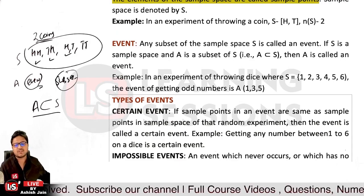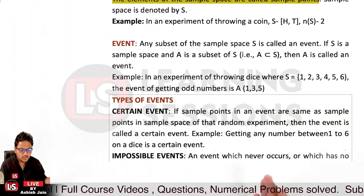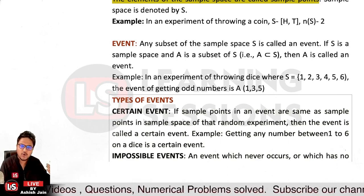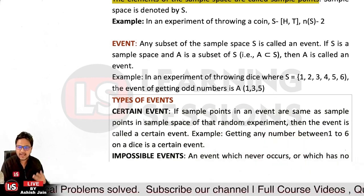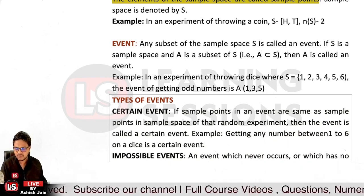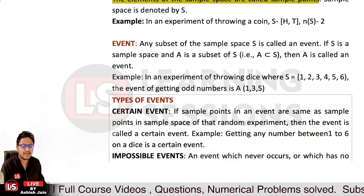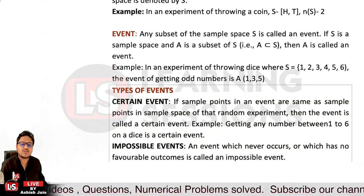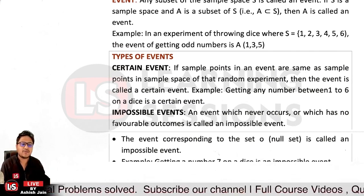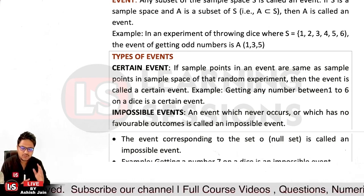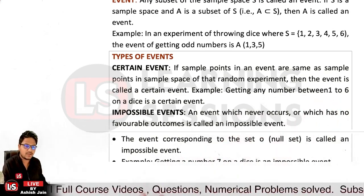Let's learn the different types of events. Certain events are those where you are quite certain about the outcomes — like rolling a dice, you know the number will be between 1 and 6. When tossing a coin, you will get either head or tail. An impossible event is one that cannot occur — like getting 7 on a dice. That event corresponds to a null set and cannot be a subset of the sample space.